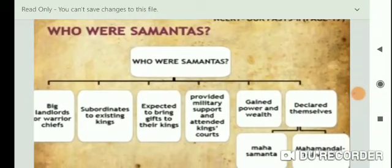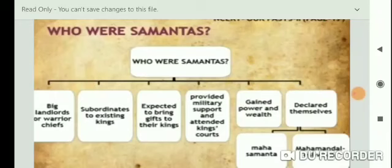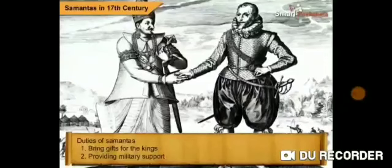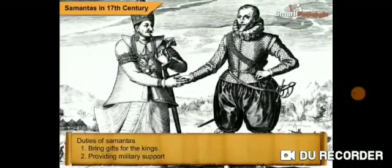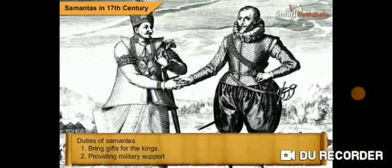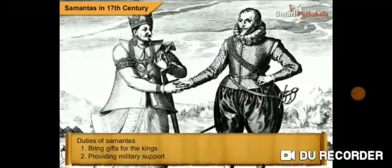So who were the Samantas? They were big landlords and warrior chiefs, subordinate to existing kings. They were expected to bring gifts to their king, support military forces, and be present in the king's court. As they gained power and wealth, they declared themselves superior titles: Maha Samanta and Maha Mandeshwara.